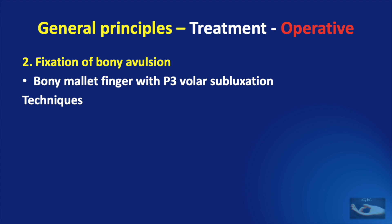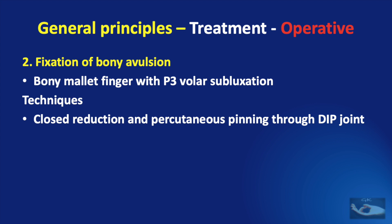Fixation can be achieved by different techniques: closed reduction and percutaneous pinning through the distal interphalangeal joint, open reduction and fixation if less than 50% of the articular surface of the terminal phalanx has been avulsed, or extension block pinning. The details of all these procedures will be seen when we talk about specific zone injuries in subsequent videos.